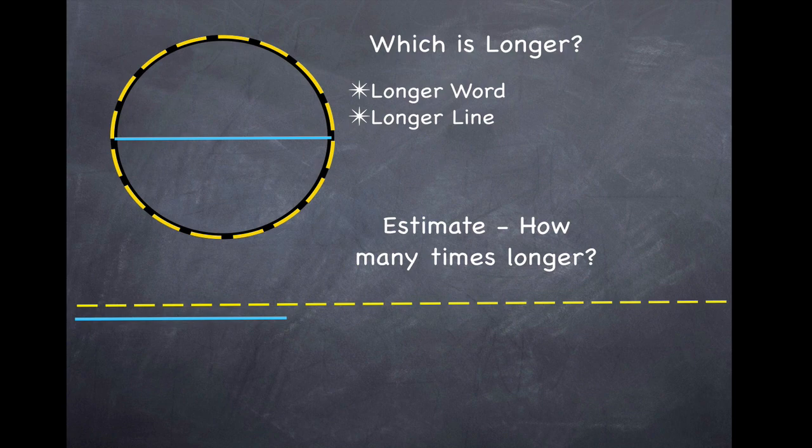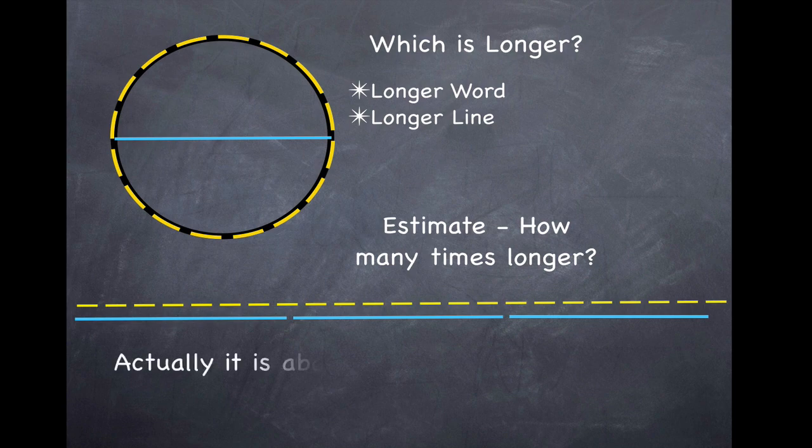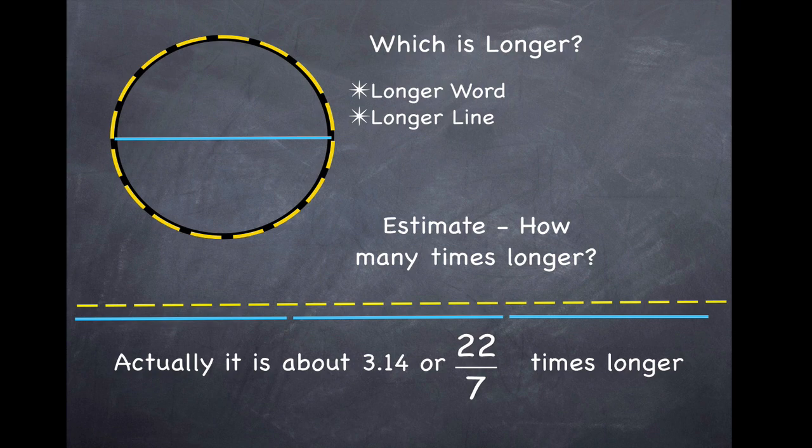So how many times longer is the yellow circumference than the blue diameter? Well, it's about 2 or 3, and a little bit more than 3. Actually, it's about 3.14 or 22 sevenths times longer. That's where pi comes from. It's that fact that there's a constant relationship between the diameter and the circumference.